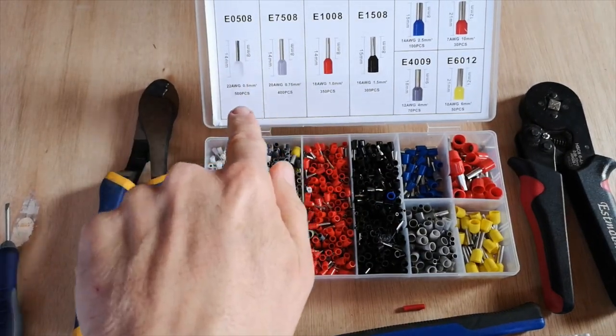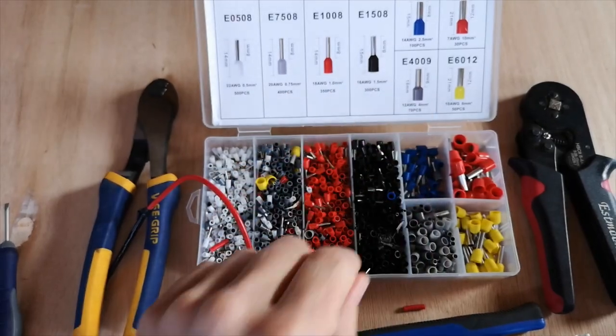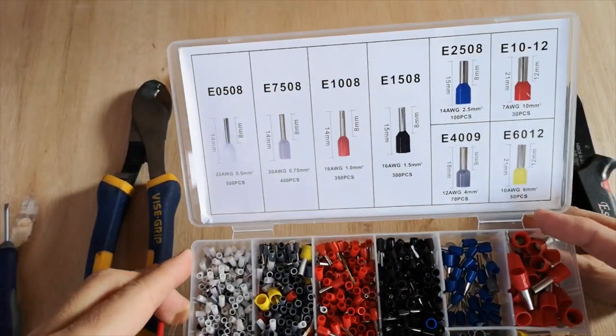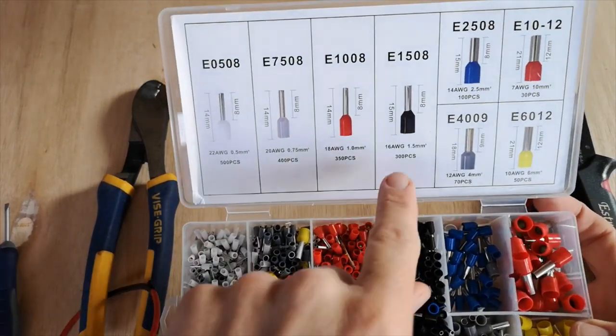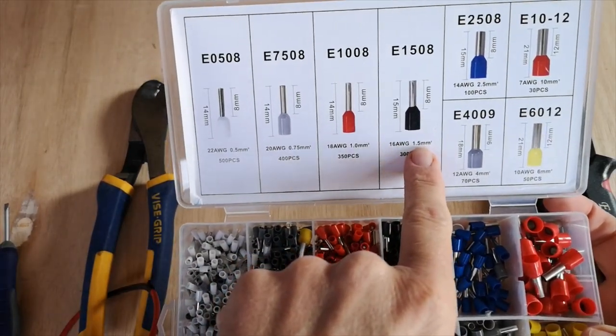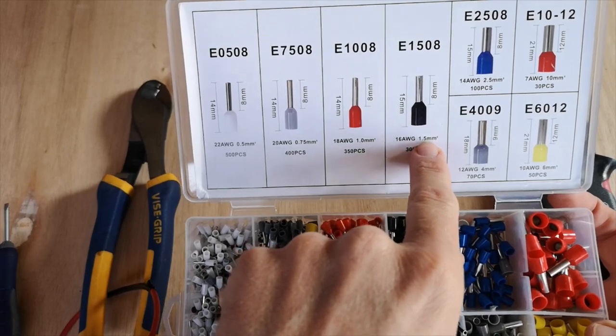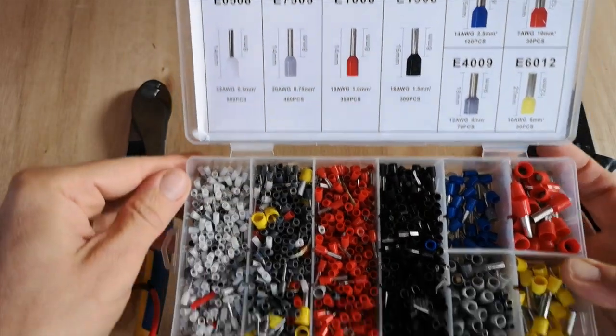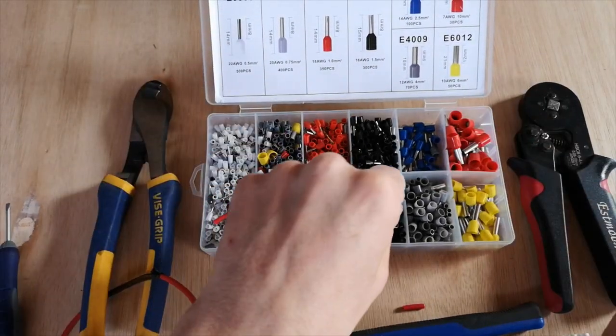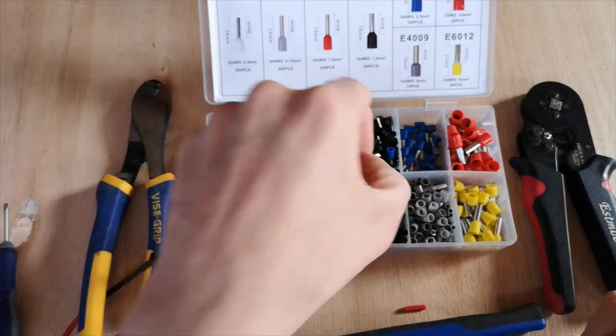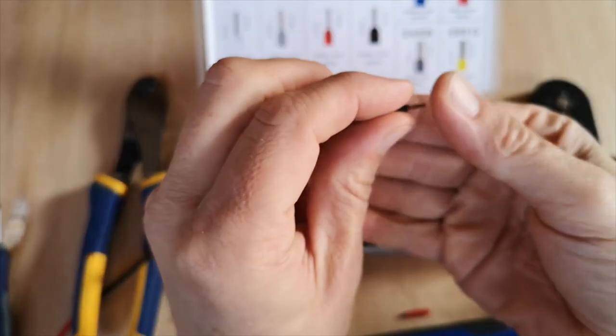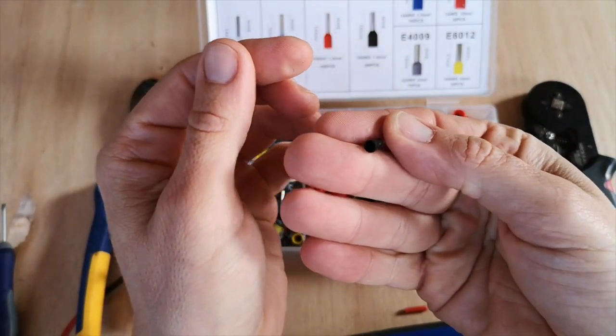Choose your ferrule to suit the application. In this case we're using 1.5mm square cable, so we want to choose the 1.5mm square ferrule crimp to suit. We don't want to be trying to put a 3mm square ferrule crimp onto a 1.5mm cable. We want to be using the right ferrule crimp for the right cable.